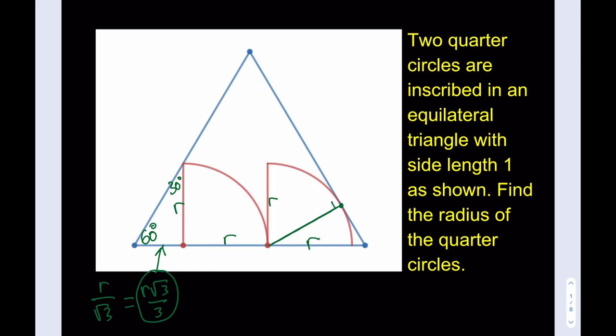And this is a perpendicular line, and this is also the radius. Beautiful. Now, what happens is we get another 30-60-90 triangle here. This is 30 degrees, and this is 60 degrees.